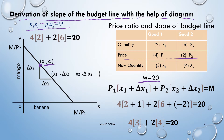We know the budget line equation: P1·X1 + P2·X2 = M. The price of good one P1 is 4 rupees and quantity X1 is 2. The price of good two P2 is 2 rupees and the quantity of good two X2 is 6. Multiply and add: you get 20 rupees, which is equal to the consumer's income.